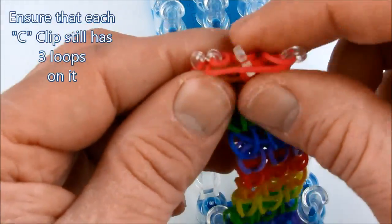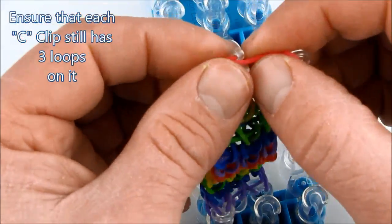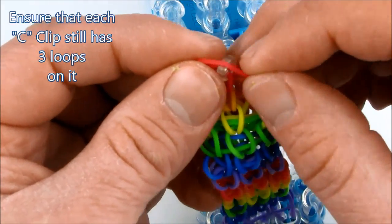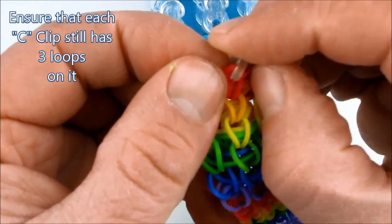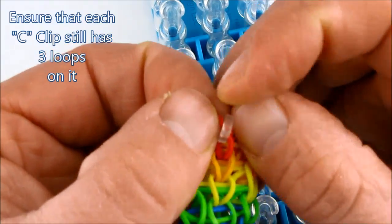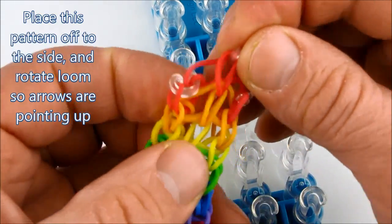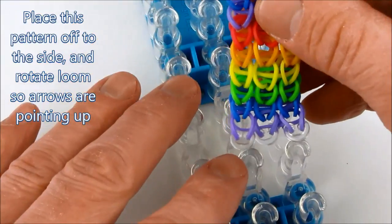We can take a look at the c-clips to make sure that they all have three loops of elastics on them. If not, just reposition them so that each clip has three elastics. And then we can put this off to the side.